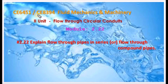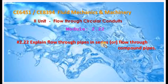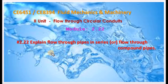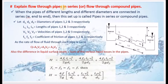CE6451 / CE8394 Fluid Mechanics and Machinery, 2nd Unit — Flow Through Circular Conduits, Module 2.22. Today we will explain Flow Through Pipes in Series, also called Flow Through Compound Pipes. The concept of compound pipes involves various diameter pipes connected end to end. This is illustrated using a diagram with a reservoir.